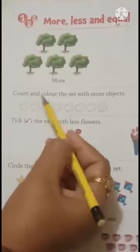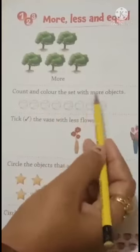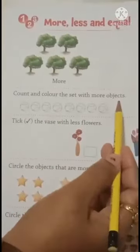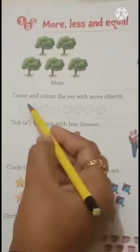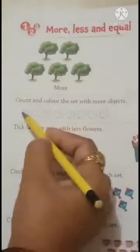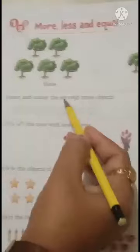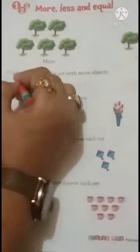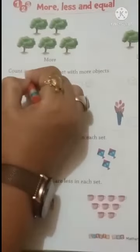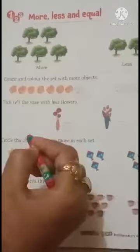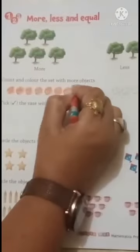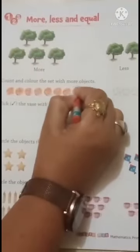Count and color the set with more objects. Children, this means more objects, it has to color it. The number of objects is more, it has to color it. Now children, start coloring. See children, more objects coloring completed.